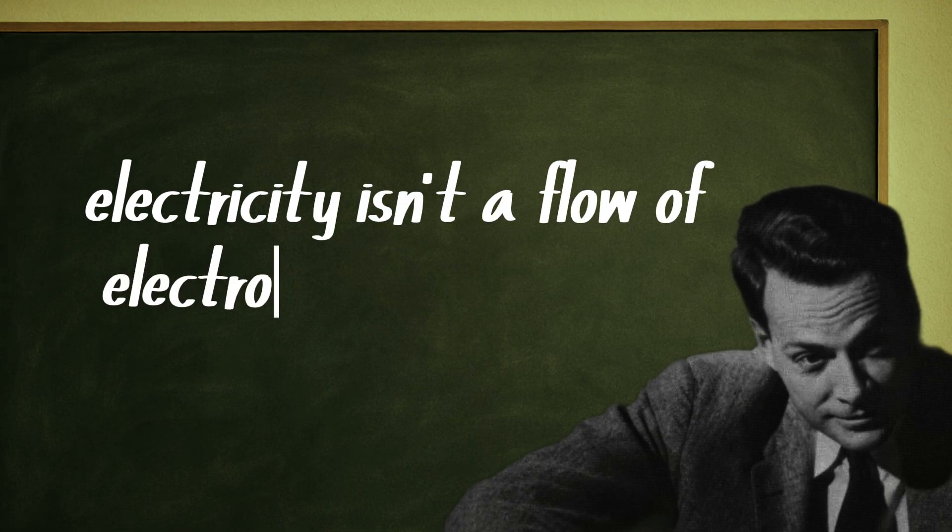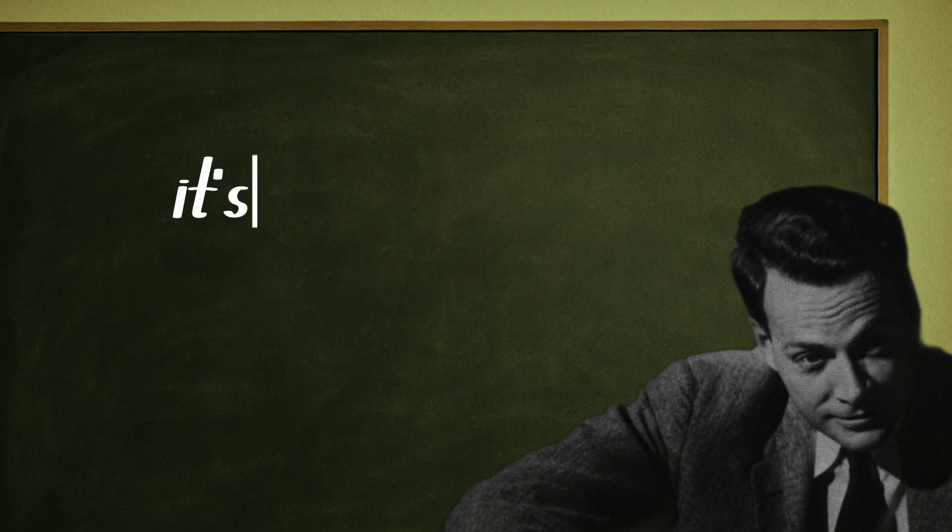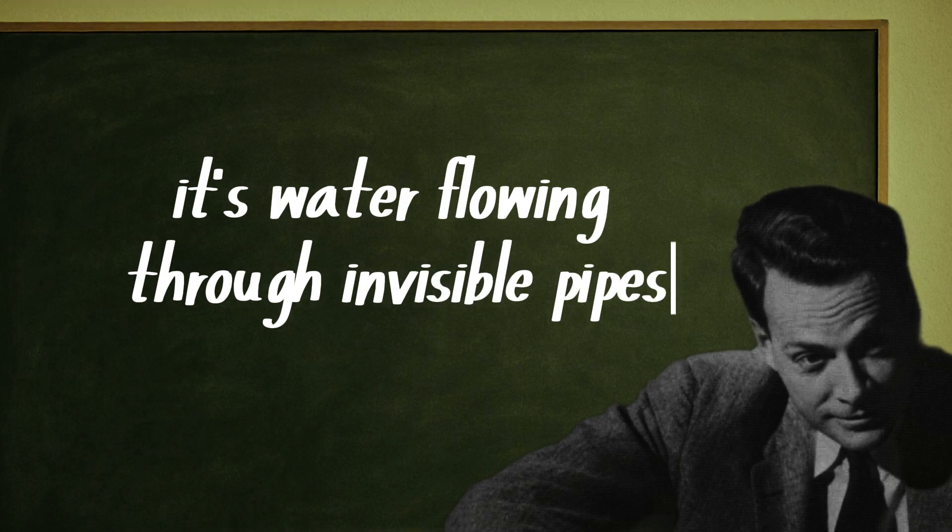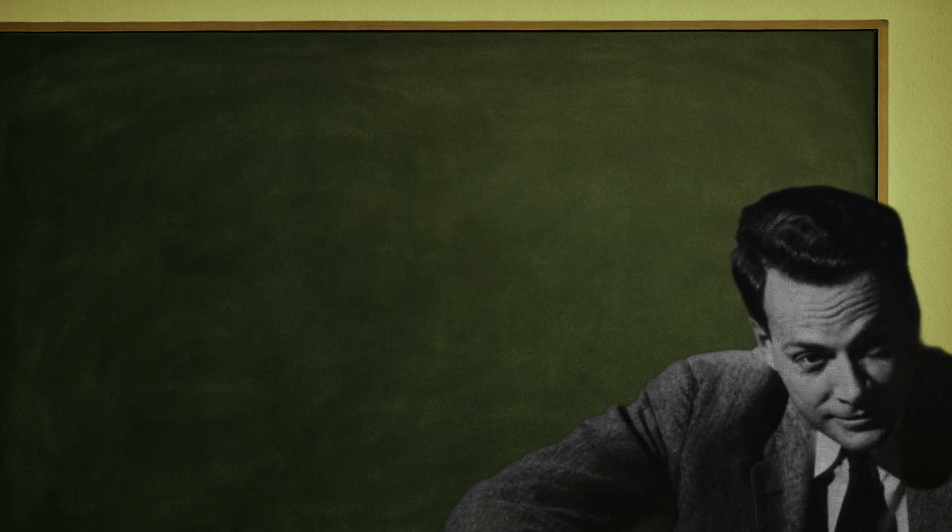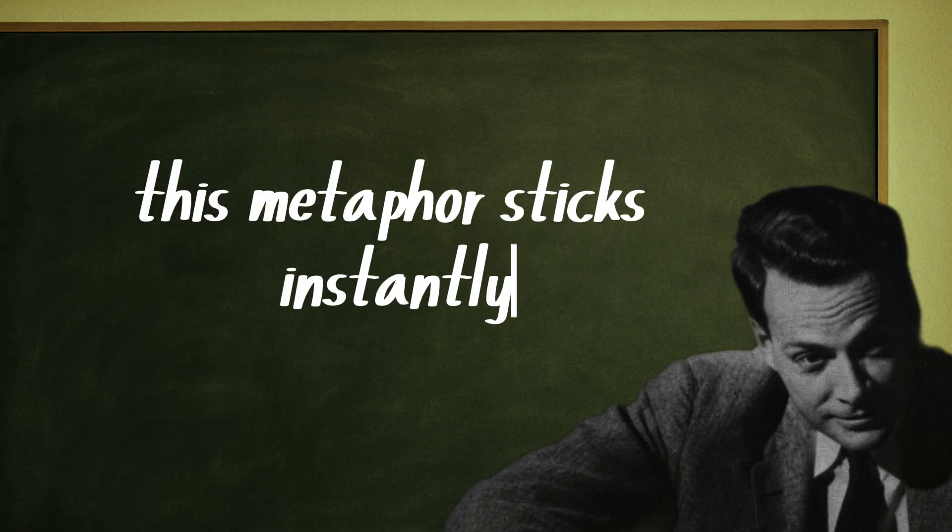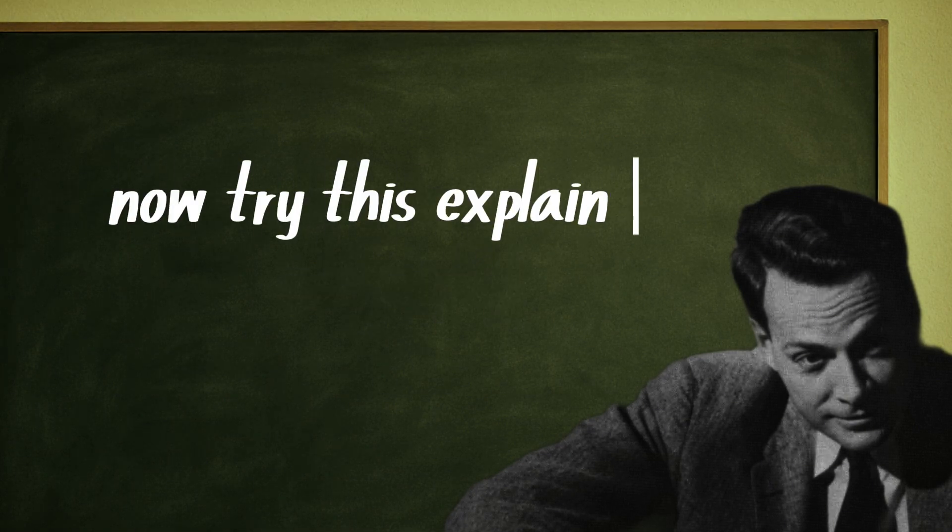For example, electricity isn't a flow of electrons in a conductor—it's water flowing through invisible pipes, where water pressure is voltage and the flow of water is current. This metaphor sticks instantly.